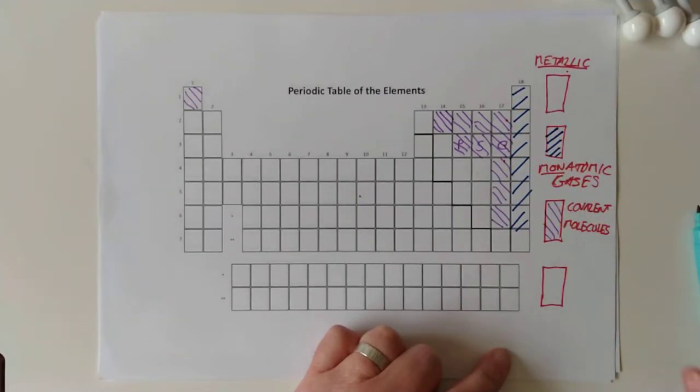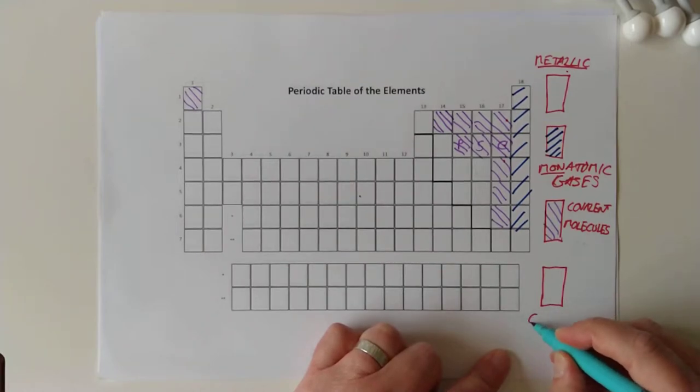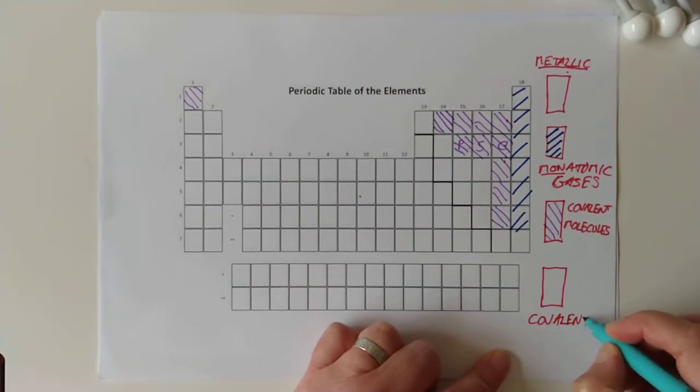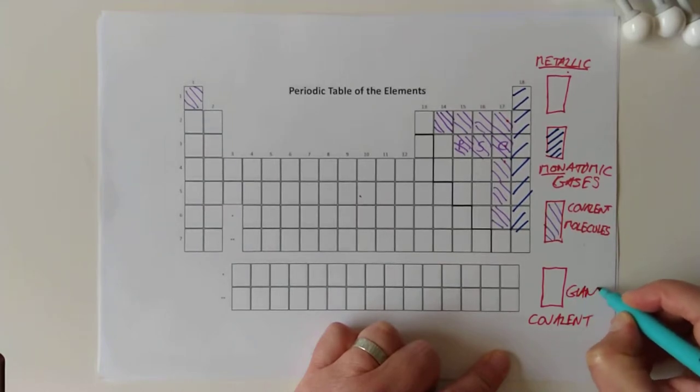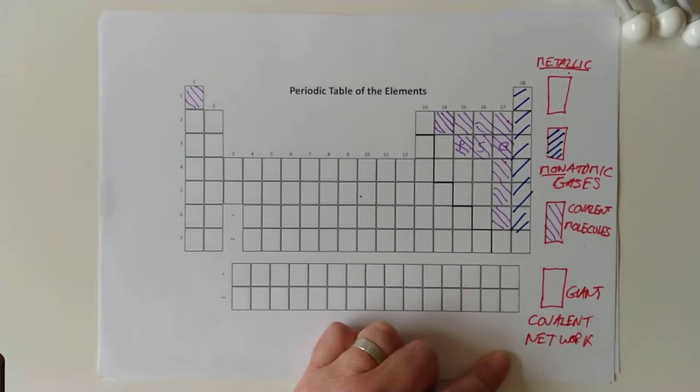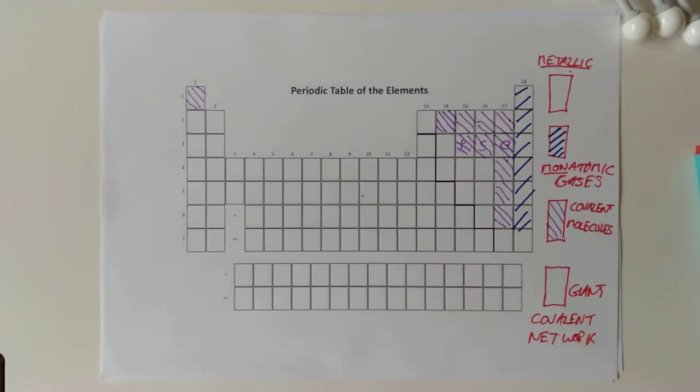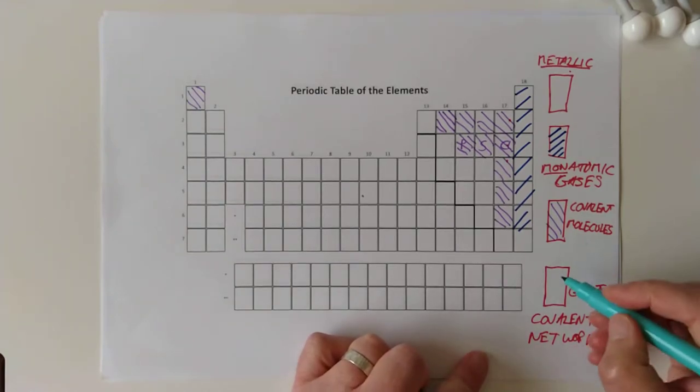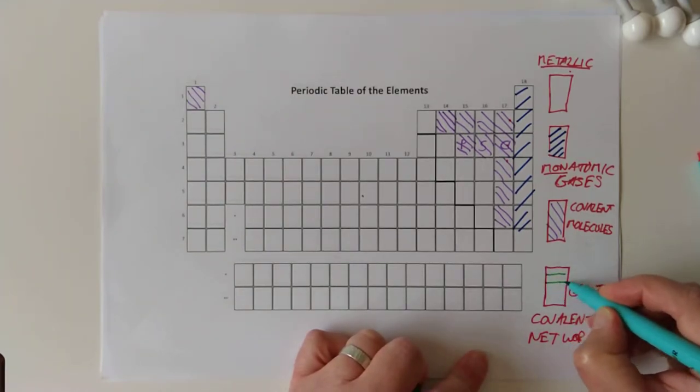I think we'll stick with the last one is covalent again, but it's a giant covalent network. And I'm going to point out the ones you need to know about, point out a little trick question the SQA likes to throw at you, and I've got some pretty pictures as well. In green for giant covalent networks, I'm going to go horizontal lines. There we go, the last of our four types.